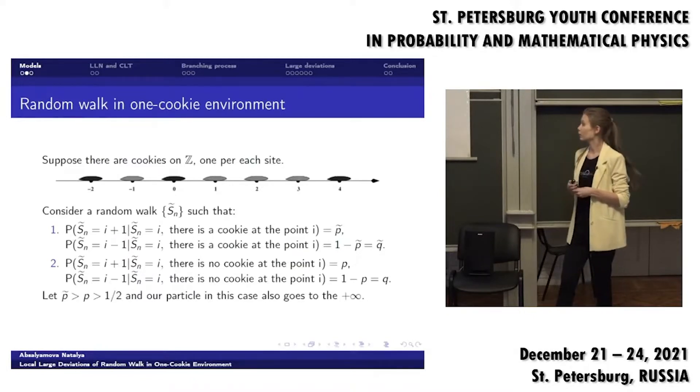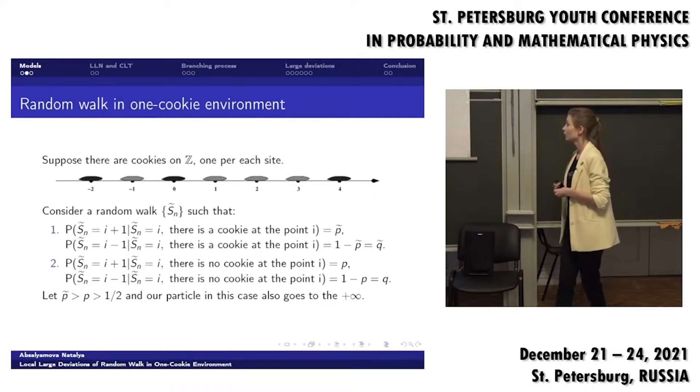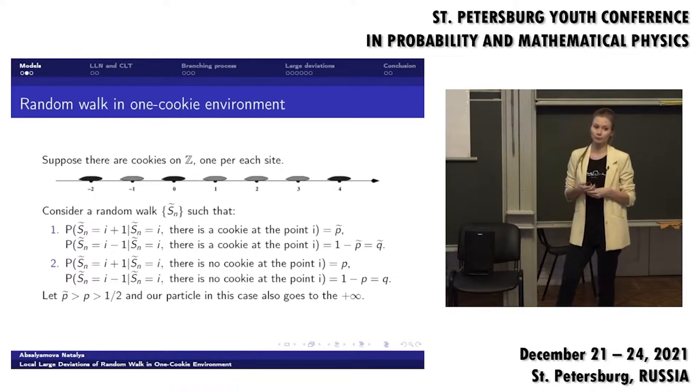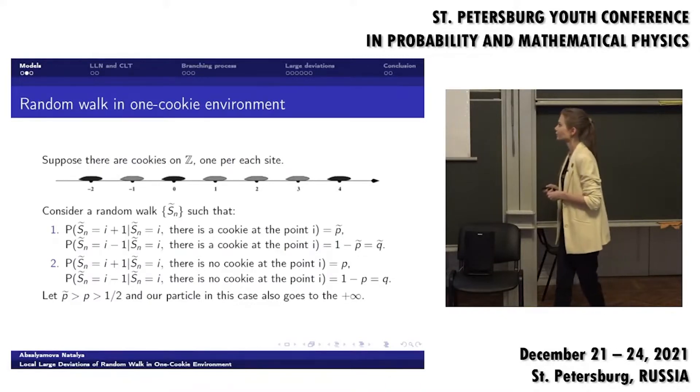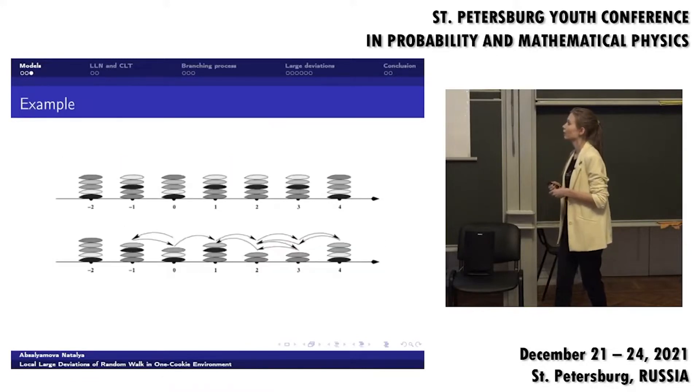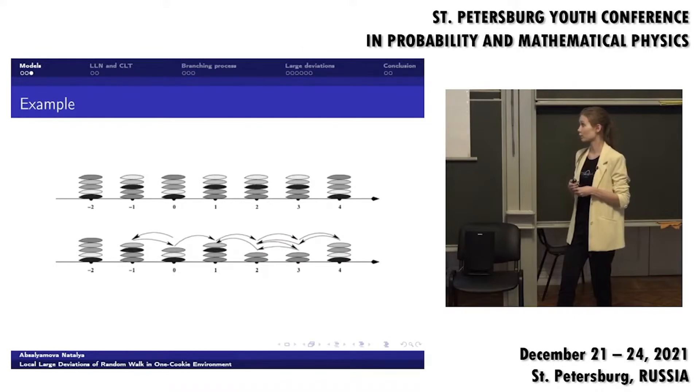Let tilde p be greater than p and all of them are greater than one half. Then our particle in this case also goes to plus infinity when time tends to infinity. Here you can see an example of when there are more than one cookie at each point and the particle starts from point zero, eats cookie and goes to the left, to the right and so on.